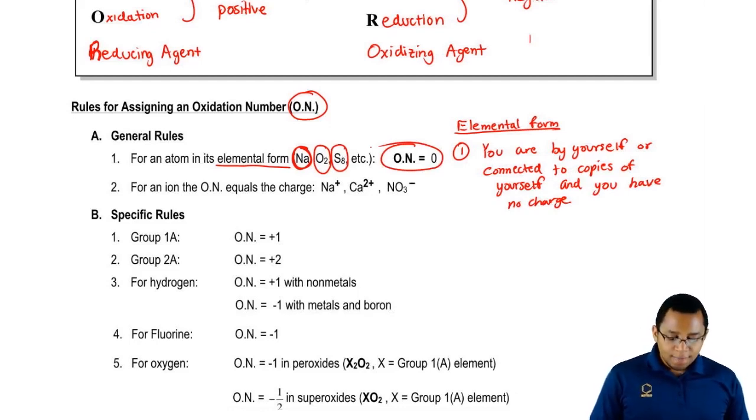The second general rule is for an ion, whatever the ion's charge is, that's its oxidation number. So sodium here is by itself, but it has a plus one charge, so its oxidation number is plus one. Calcium is by itself, but it has a plus two charge, so its oxidation number is plus two.